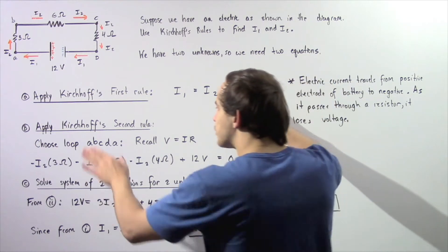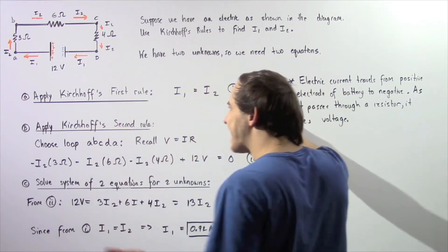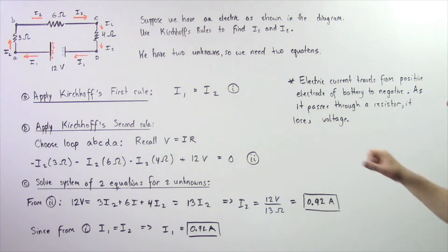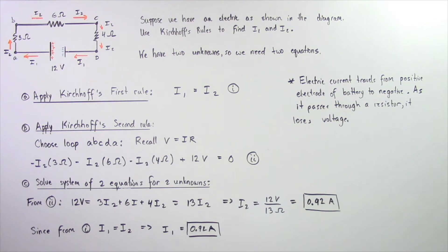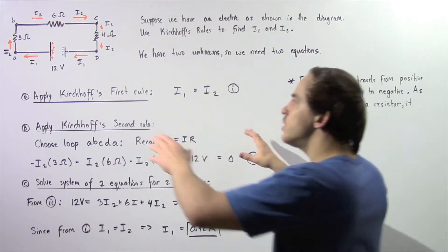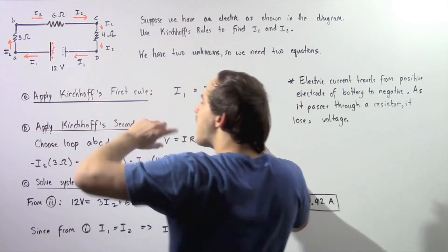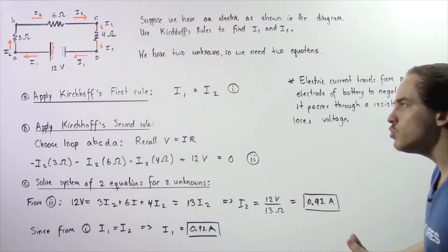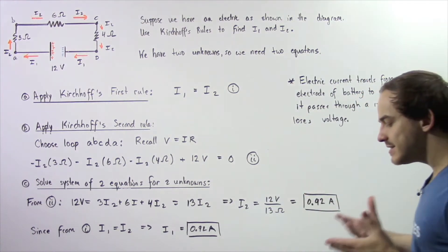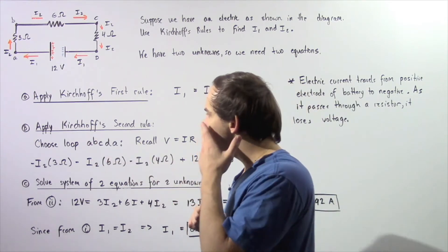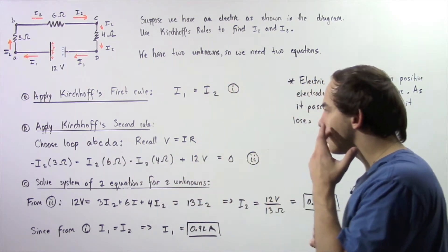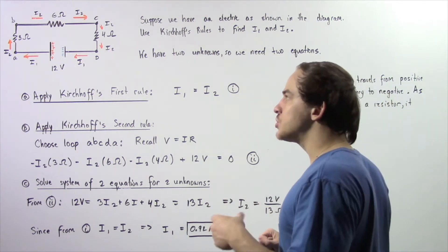Before applying Kirchhoff's 2nd rule, note that electric current generally travels from the positive electrode of the battery to the negative electrode. As it travels from positive to negative, it passes through resistors and loses a quantity of voltage given by Ohm's law. Now let's apply Kirchhoff's 2nd rule by choosing a closed loop.